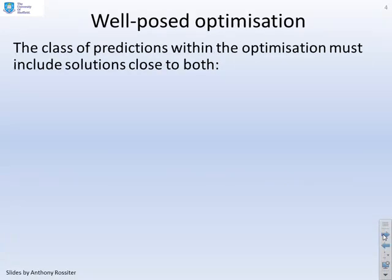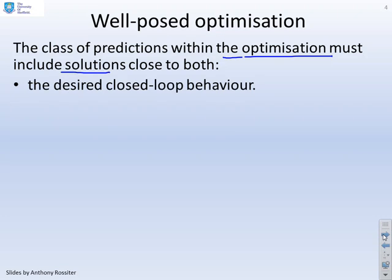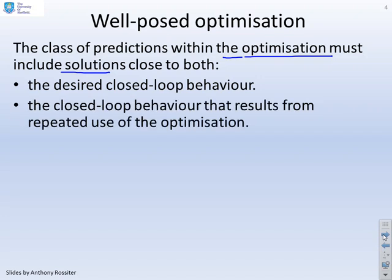What's a well-posed optimisation? The class of predictions within the optimisation — those over which you're optimising — must include several things. They must include the desired closed-loop behaviour, because if they don't, you won't be able to get it as an outcome. Additionally, the closed-loop behaviour that results from recursively using your optimisation must also be within your class of predictions, otherwise you're getting a solution that doesn't match what's actually happening — meaning you're using an ill-posed optimisation.